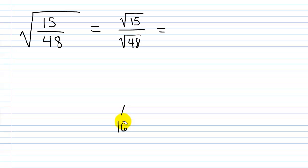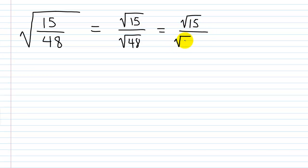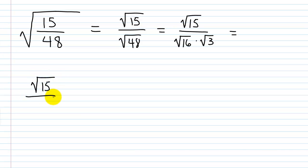So I write this as the square root of 15 over the square root of 16 times the square root of 3. The square root of 16 is 4, so I have the square root of 15 over 4 times the square root of 3. Now I'm done, right? Wrong — there's something else you can do here.